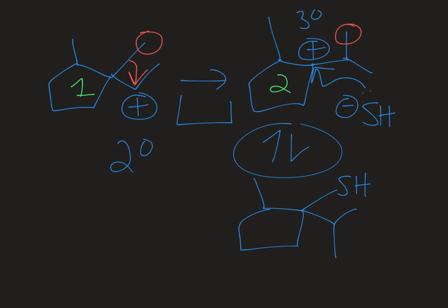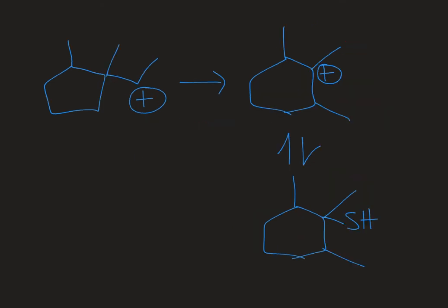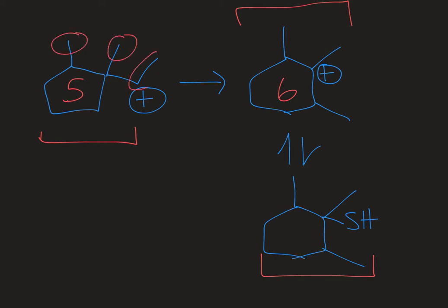Now let's look at the last example — the ring expansion. We had identified a carbocation intermediate as the precursor to the final ring-expanded product, and we know the original carbocation was generated when the leaving group left. Using the same tip — what is different — one big difference is that we're going from a five-membered ring to a six-membered ring. You can also see that in the starting carbocation we have a methyl, a methyl, and an ethyl, but on the rearranged product we have three methyl groups and an expanded ring.